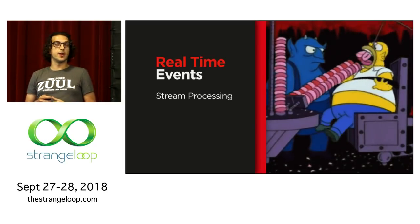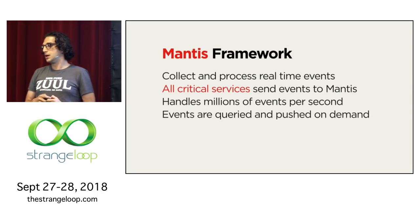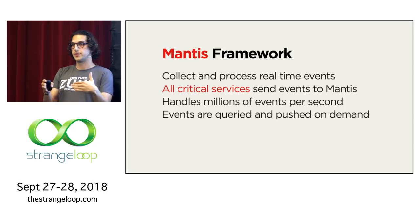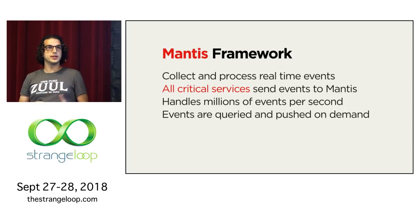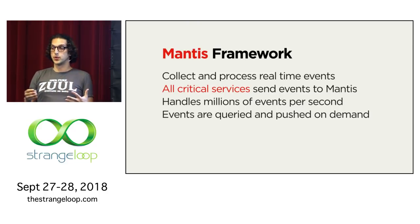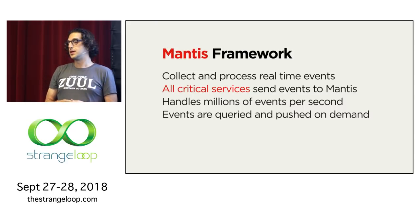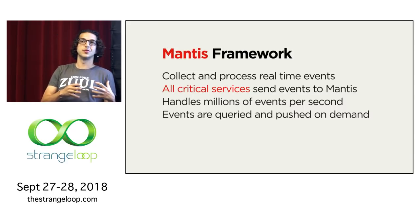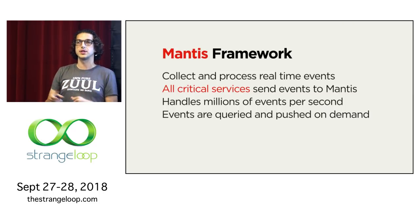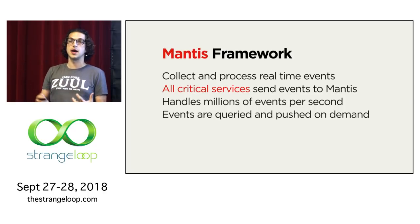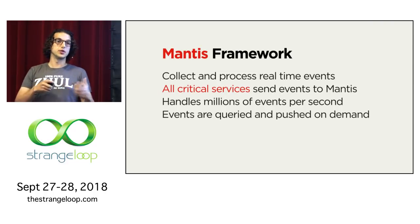For stream processing, we use a framework called Mantis, which is used to collect and process real-time events. You can think of it as Kafka plus Apache Flink put together. All the critical services at Netflix send events into Mantis. Just for Zuul, we send millions of events per second across thousands of devices, and each event has hundreds of dimensions. Mantis allows us to search and sift through those events and pick out the slice we need for all our real-time traffic. We can submit a query, and it'll match the query and return results.